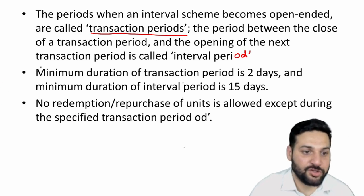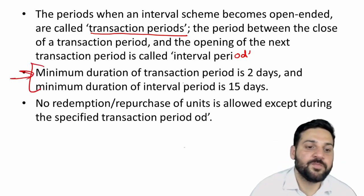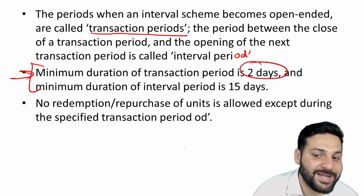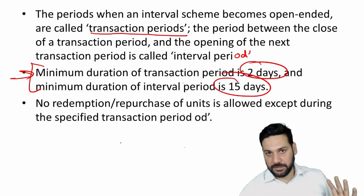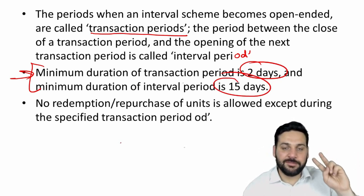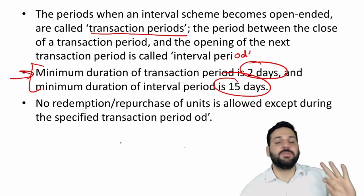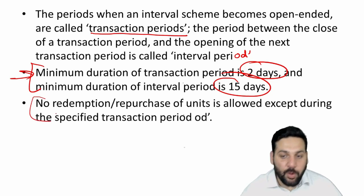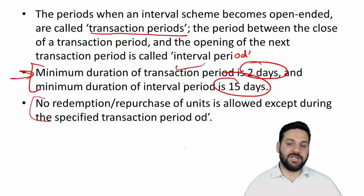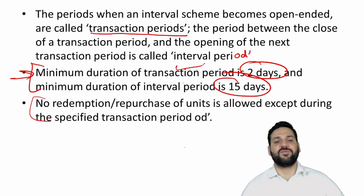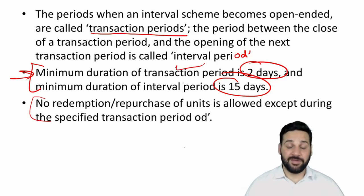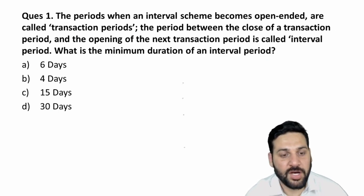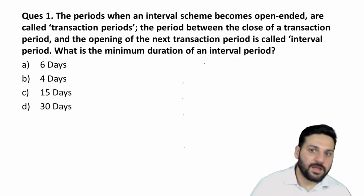This is really important and repeated in exams: the minimum duration of the transaction period is 2 days, and the minimum duration of the interval period is 15 days. No redemption is allowed outside of the transaction period — you must wait for the next transaction window.